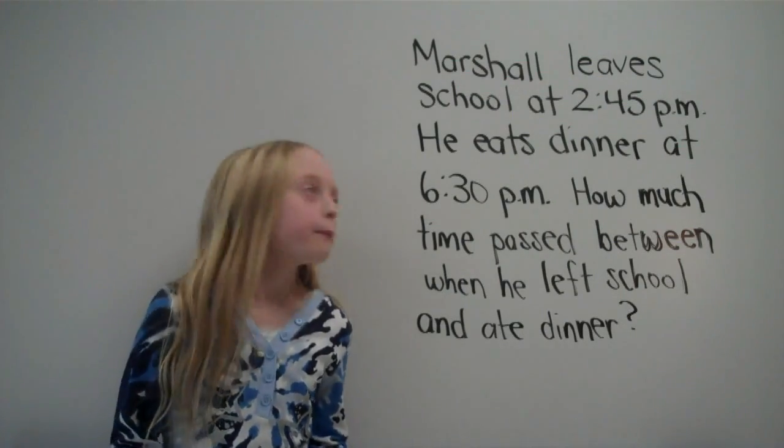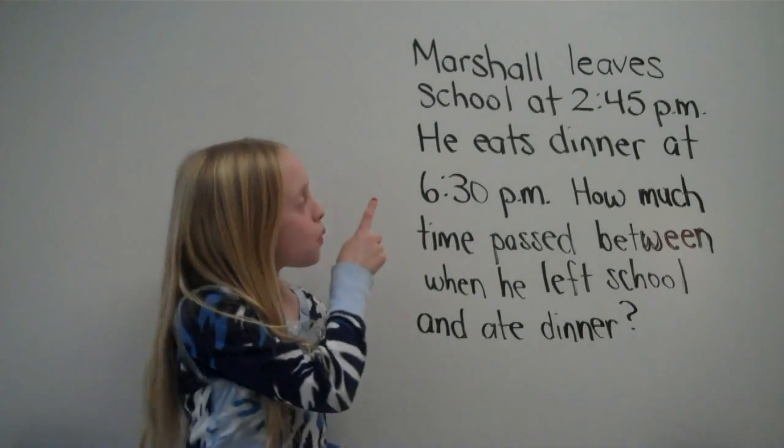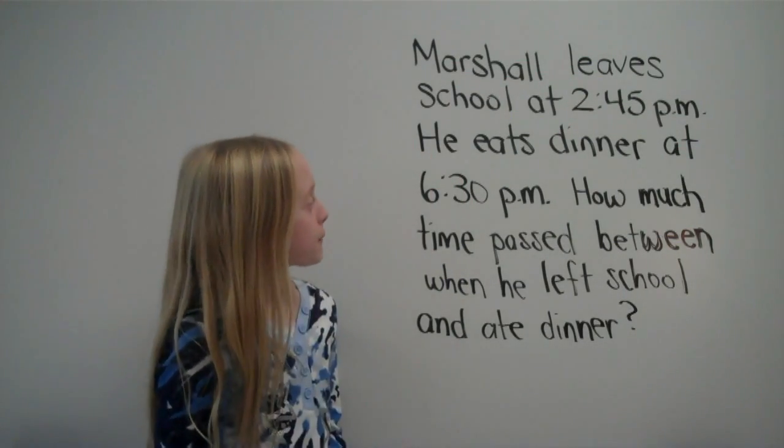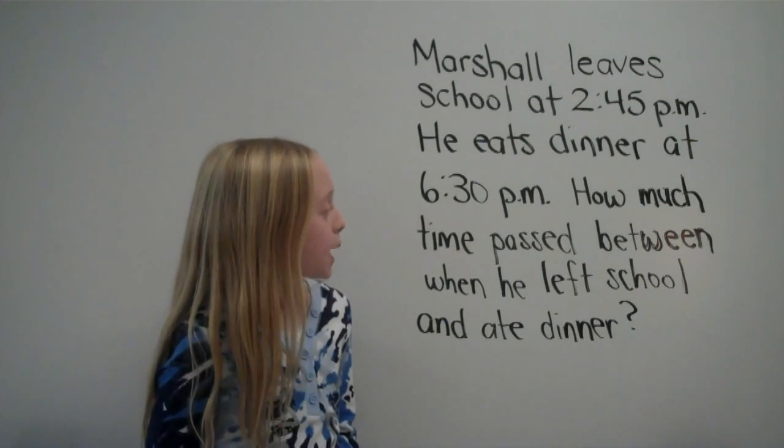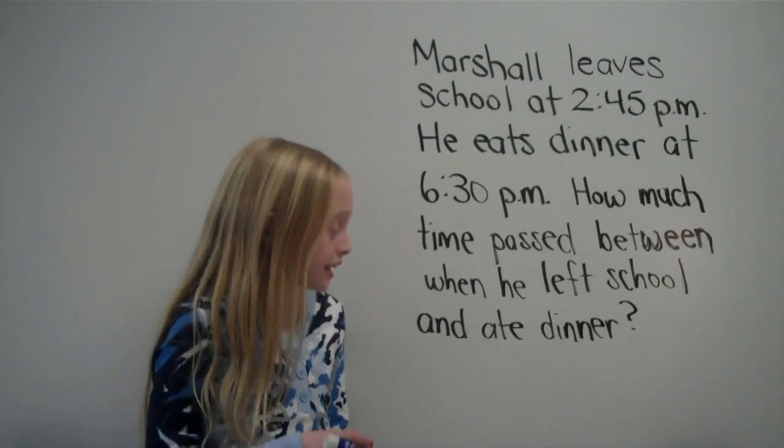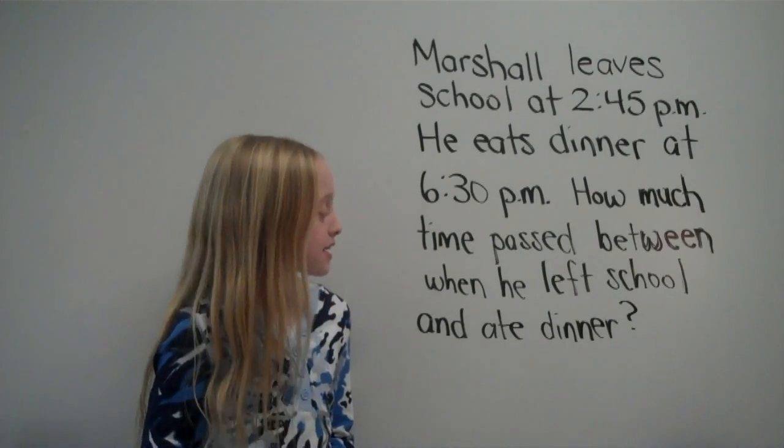Here's an elapsed time problem. Marshall leaves school at 2:45 p.m. He eats dinner at 6:30 p.m. How much time passed between when he left school and ate dinner?